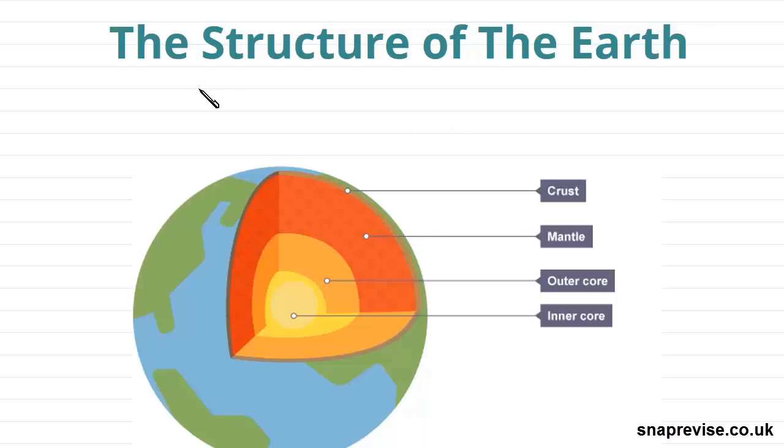To begin with, we're going to look at the structure of the earth, and the earth is divided into three main regions, being the core, the mantle and the crust.